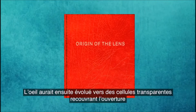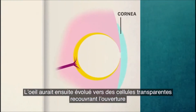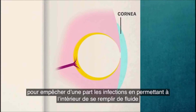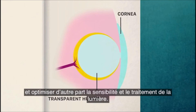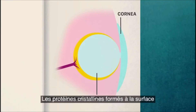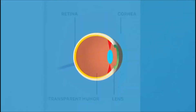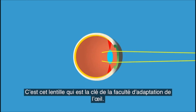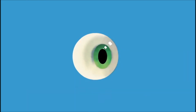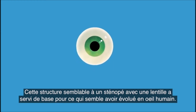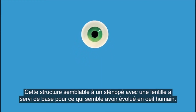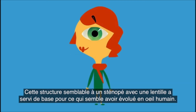This is thought to have evolved through transparent cells covering the opening to prevent infection, allowing the inside of the eye to fill with fluid that optimizes light sensitivity and processing. Crystalline proteins forming at the surface created a structure that proved useful in focusing light at a single point on the retina. It is this lens that is the key to the eye's adaptability. This structure of the pinhole camera with a lens served as the basis for what would eventually evolve into the human eye.